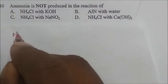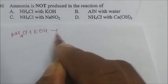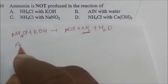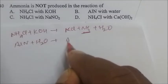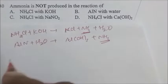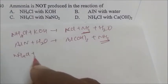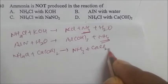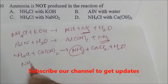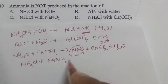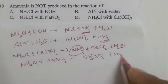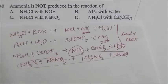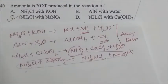The question asks which reaction does NOT produce ammonia. Reaction 1: NH4Cl + KOH on heating → KCl + NH3 + H2O — ammonia produced. Reaction 2: ammonium nitride + water → NH4OH + NH3 — ammonia produced. Reaction 3: NH4Cl + Ca(OH)2 → CaCl2 + NH3 + H2O — ammonia produced. Reaction 4: NH4Cl + NaNO3 → NH4NO3 + NaCl — double displacement, no ammonia produced. The correct answer is reaction 4.